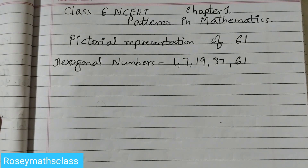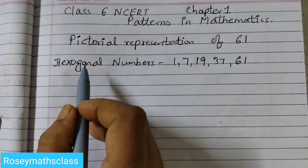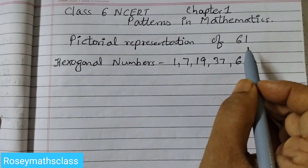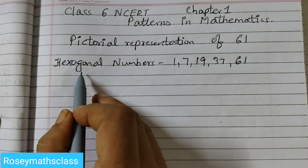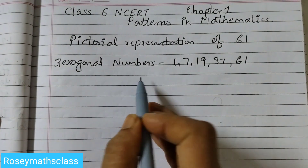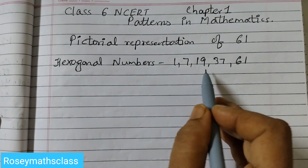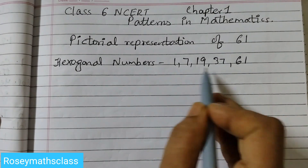Hello students, today we will learn a very easy way to represent 61 using dots — that's the pictorial representation of 61. 61 is a part of this sequence of hexagonal numbers: 1, 7, 19, 37, 61.